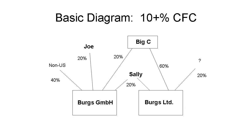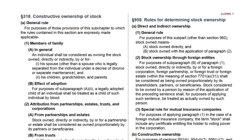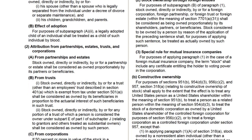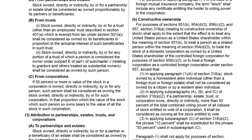I'll use this basic structure in examples in these videos. Joe and Sally are U.S. individuals, and Big C is a C-corporation organized in Delaware. None of them are related. The two foreign Bergs corporations operate hamburger restaurants in their countries of incorporation. Ownership percentages are determined with attribution rules. Attribution includes husband and wife, parent and child, a corporation and its shareholders, and a partnership and its partners.